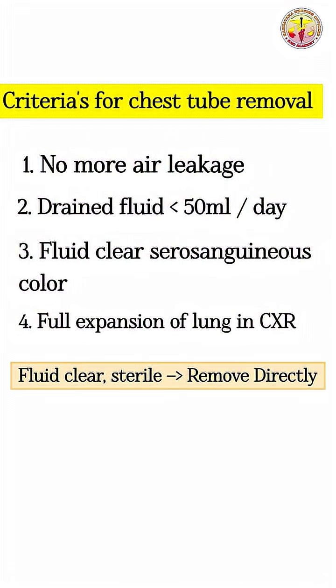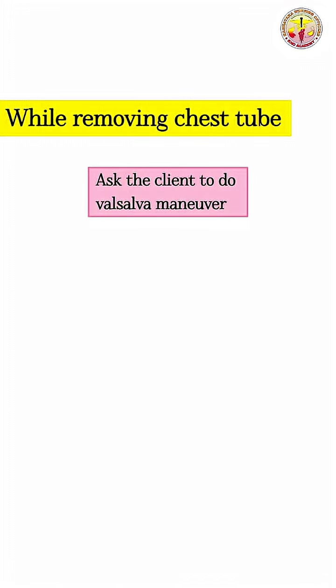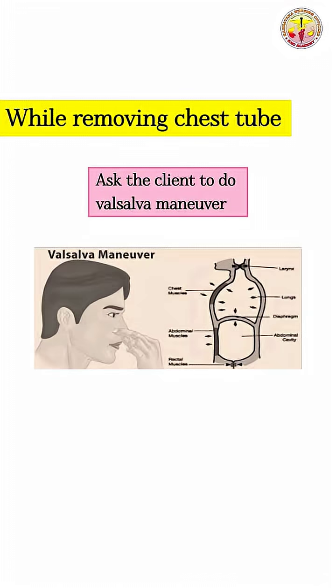If the fluid is clear and sterile, you can remove the tube directly. If the fluid is turbid or infected, withdraw the tube progressively. Most importantly, while removing the chest tube, ask the client to perform the Valsalva maneuver in order to prevent air entry. That covers the criteria for removal of chest tubes.